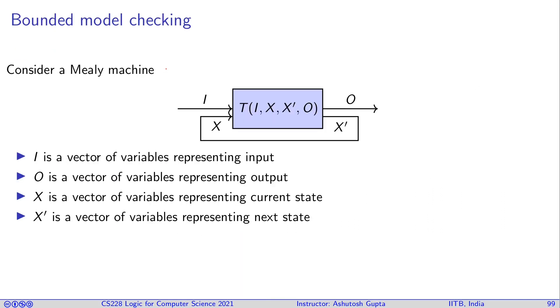Let's look at another example of solving practical problems using SAT solvers. Let's suppose you have a Mealy machine which takes input in every cycle and produces an output in every cycle, and it has internal state X. And each time it processes an input and the last previous state and computes the next state which goes back to be used again for the computation of the next state. So I is a vector of variables representing input, O is a vector of variables representing output, X is the vector of variables representing current state, and X prime is the vector of variables representing the next state.